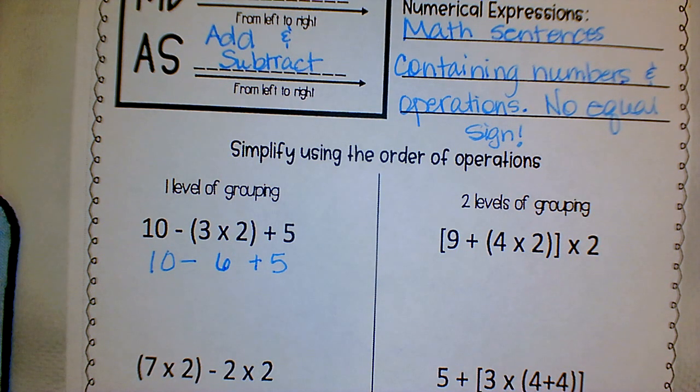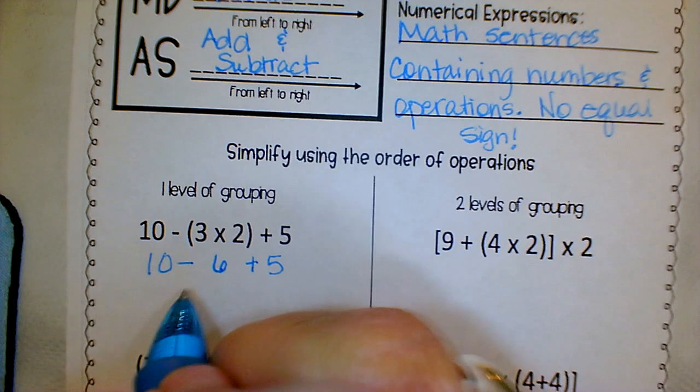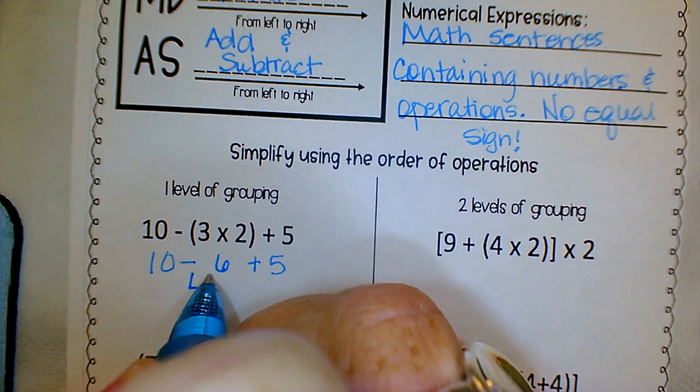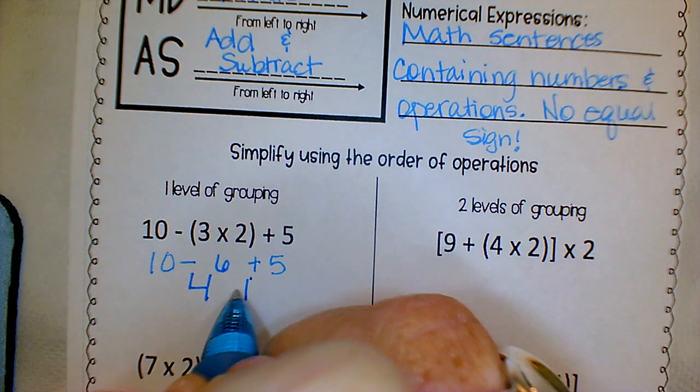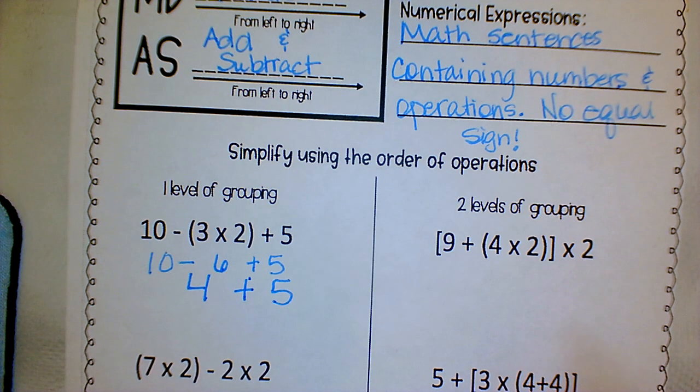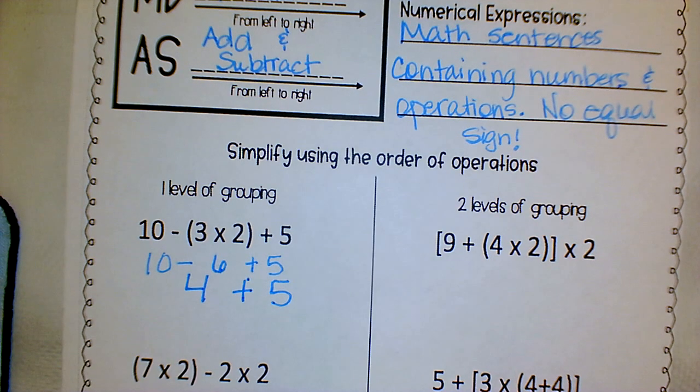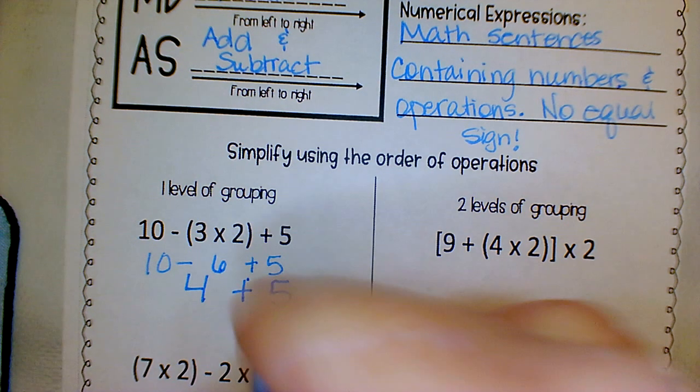So our new expression is ten minus six plus five. What comes first? Jacob. Excellent. What is ten minus six? Four. So again, bring that under the expression and write down what's left. What do we have left? Four plus five. And that is what, Morgan? Nine.